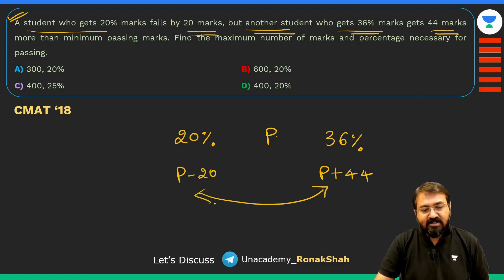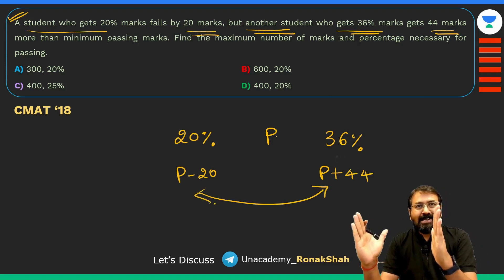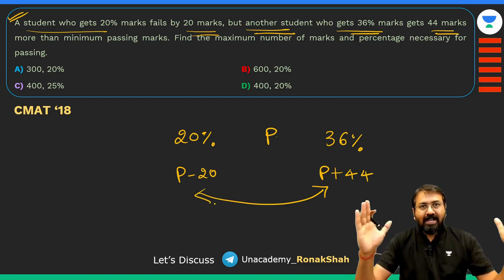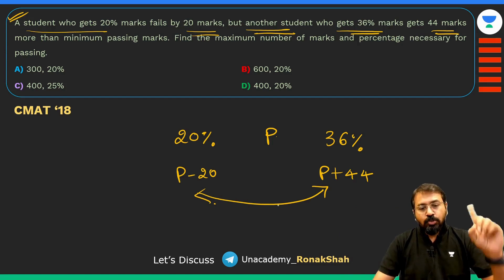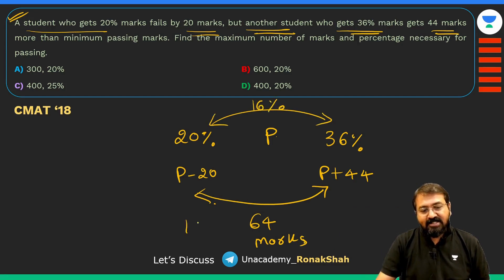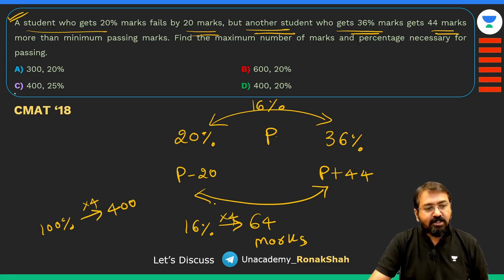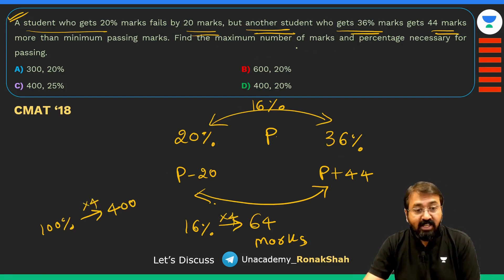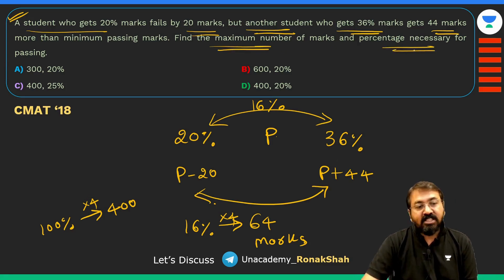Marks wise what is this difference? This is P value, so 20 less and 44 more, can I say it's minus 20 plus 44, the complete gap is 64. So this is 64 marks, and in terms of percentage this difference is 16%. So you can straight away say 16% is 64, so 100% should be 400, because this is 4 times so this has to be 4 times, so our answer should be 400.